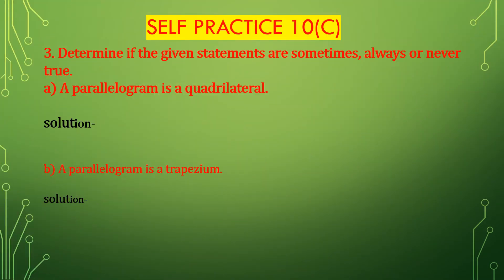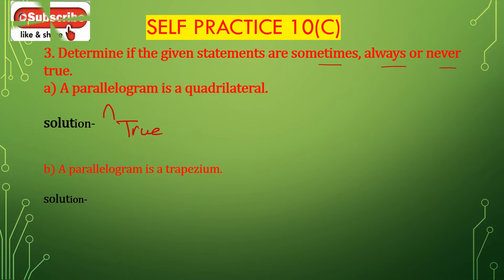Now we will solve question number 3: determine if the given statements are sometimes, always, or never true. First, bit A: a parallelogram is a quadrilateral. Yes, a parallelogram is a quadrilateral — this is always true.